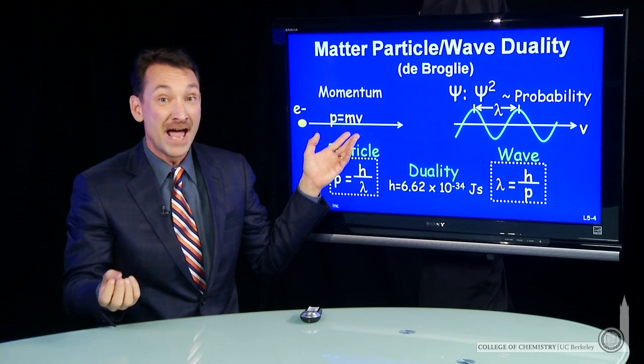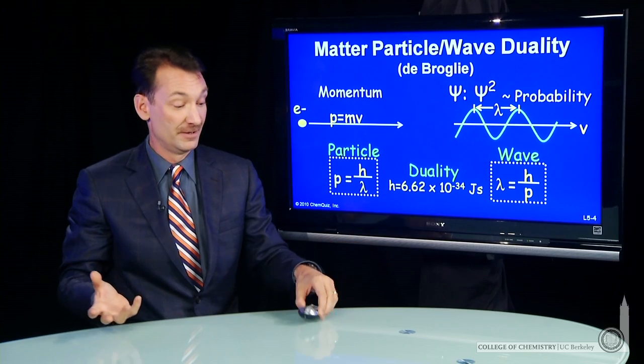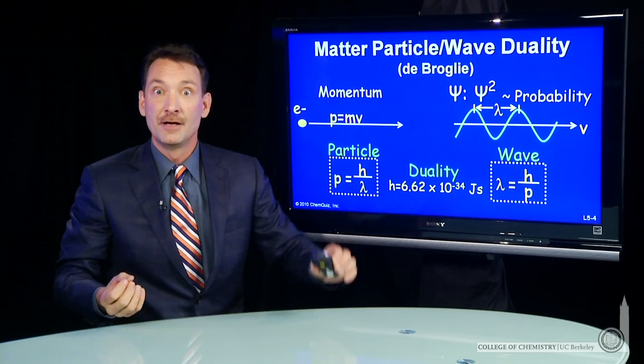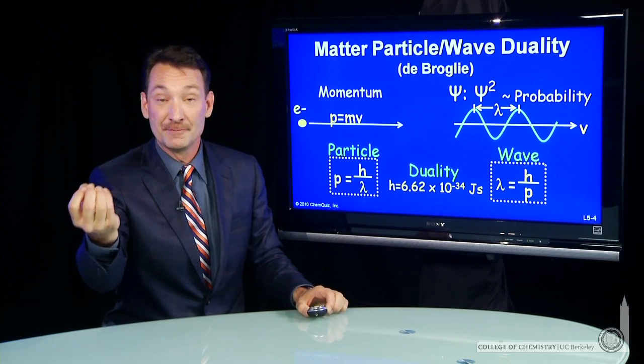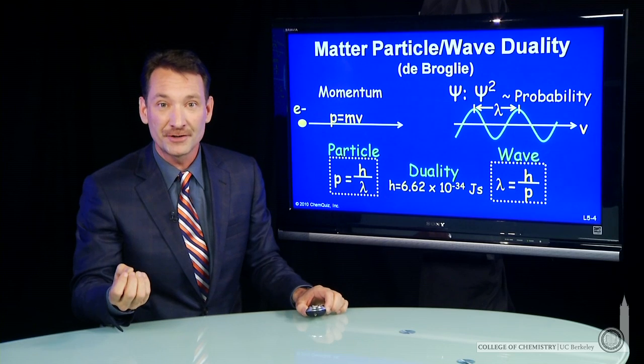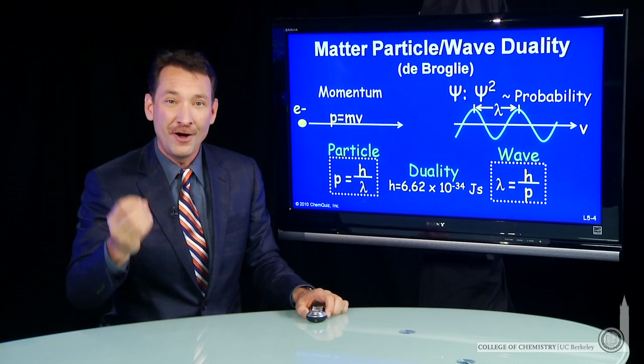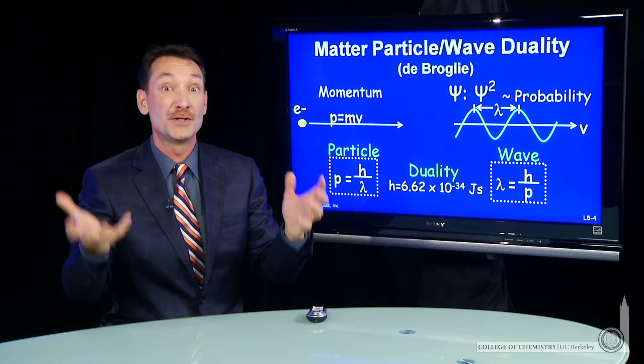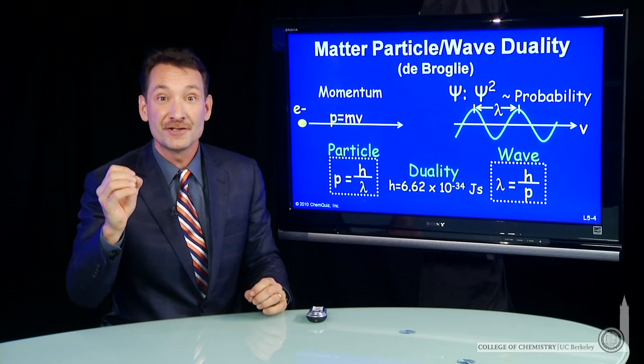Particles for matter, that's obvious. Here's a particle of matter. There's particles of matter, atoms, electrons, fundamental particles. But will they also have a wavelength? Will there be a duality here? It turns out there is.